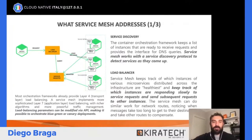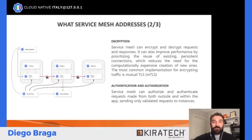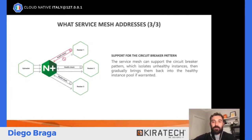Il Service Discovery dà modo ai servizi di raggiungere un altro servizio non appena questo sia attivo. Il Load Balancing smista le richieste al microservizio che in quel momento sta ricevendo meno richieste. L'Encryption garantisce che il traffico di rete venga criptato. L'autenticazione e l'autorizzazione sono meccanismi che vedremo in seguito. Il Circuit Breaker Pattern fa in modo che quando un microservizio inizia a essere più lento, possiamo subito isolarlo e restituire l'errore al client.